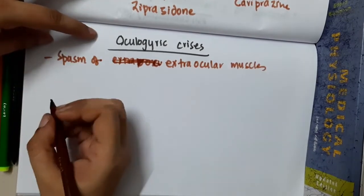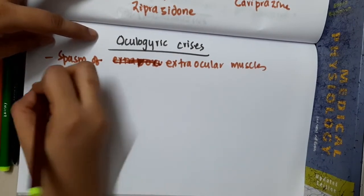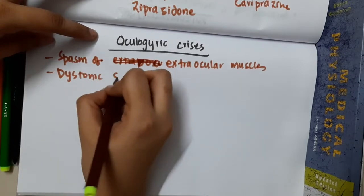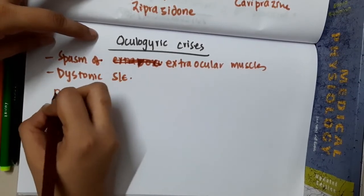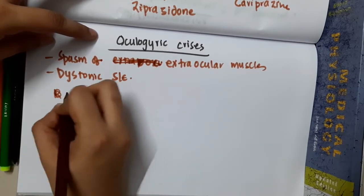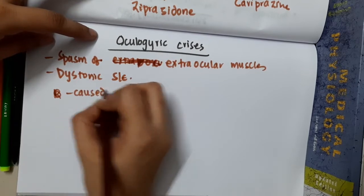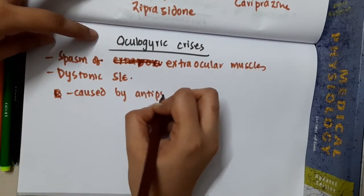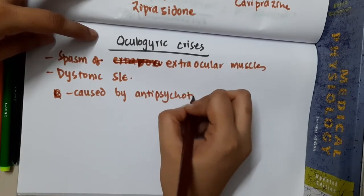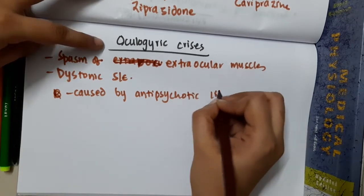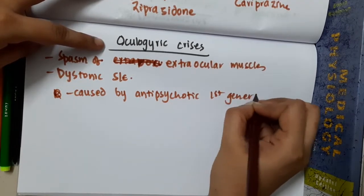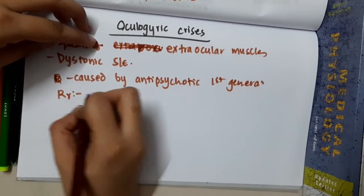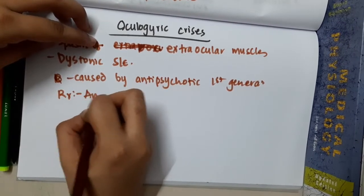Oculogyric crisis is actually a dystonic side effect. It is caused by antipsychotic drugs, specifically first-generation antipsychotic agents.